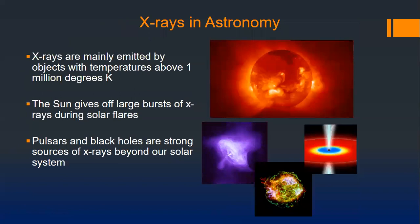X-rays are important in astronomy. Very hot objects — over a million degrees Kelvin — give off x-rays, including solar corona and supernova remnants. This is a pulsar — a supernova remnant from an exploded star — and here is a black hole. All these extreme objects reach very high temperatures and give off x-rays as a result.